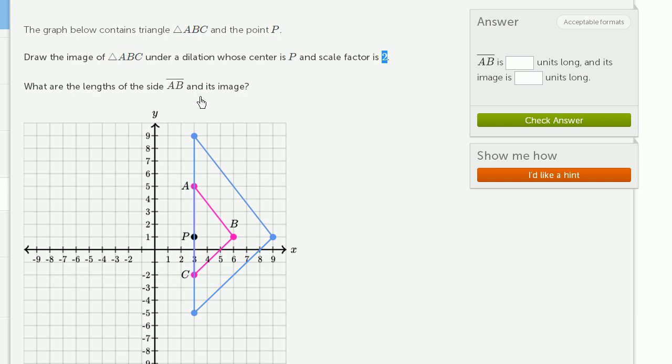Then they ask us, what are the lengths of side AB and its image? AB right over here. The change in x between the two is 3, and the change in y is 4. So this is actually a 3, 4, 5 right triangle. 3 squared plus 4 squared equals 5 squared. So AB is 5 units long, essentially just using the Pythagorean theorem to figure that out.